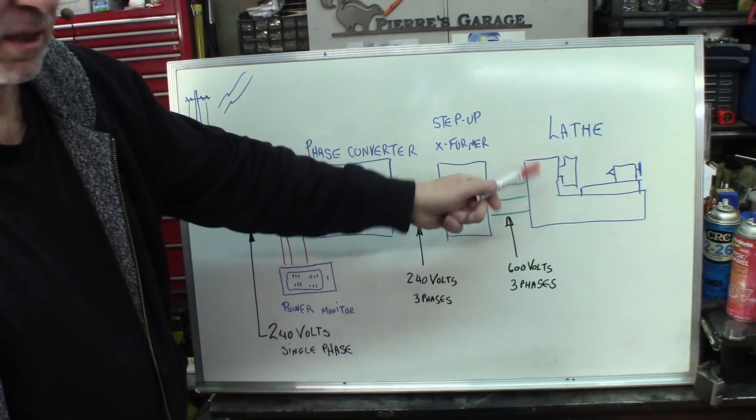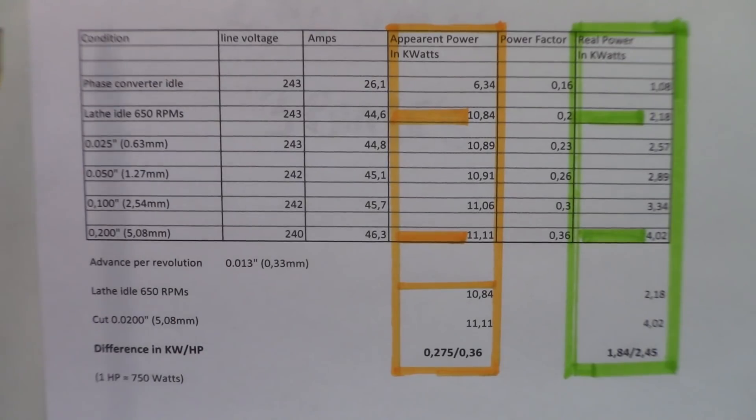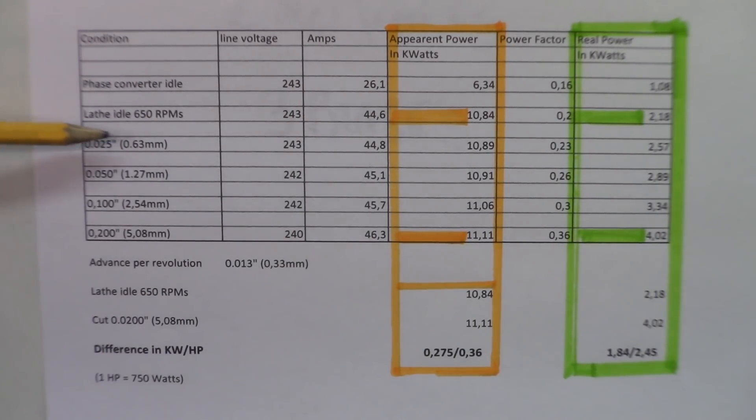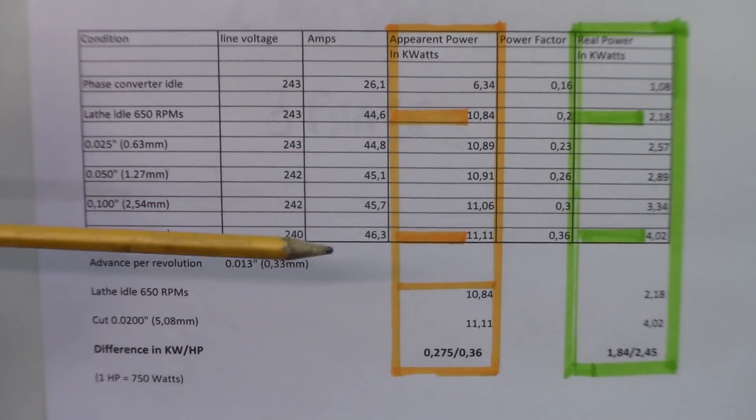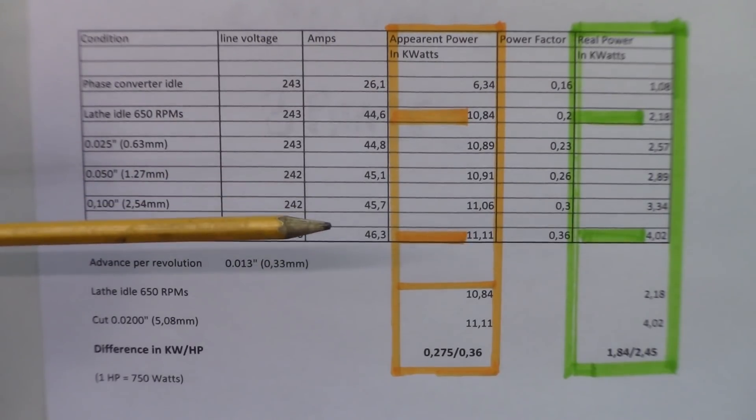I've compiled everything onto this little board here, the condition, which is like phase converter idling, the lathe just idling, and all the different size of cuts here, the line voltage according to the conditions, the amps from the line monitored at the entrance of the whole system, the apparent power here, which is the result of these two raw numbers multiplied by each other, according to the formula. So this formula, if you take it straight just like that, it doesn't take into account the phase shifting.